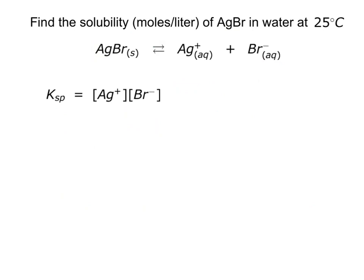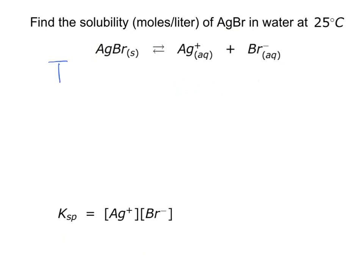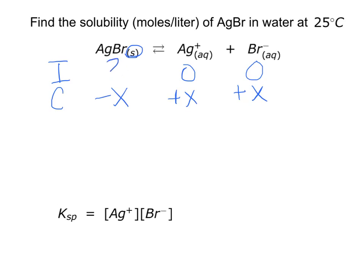Now that we have this Ksp expression, we're going to make an ICE box. Initially, there's some amount of AgBr solid, but since it's a solid it doesn't actually matter. Initially we say there is 0 Ag⁺ and 0 Br⁻. The change: Ag⁺ is going to gain some amount x, which is the same for Br⁻ because it's a 1-to-1 ratio. The AgBr solid is going to lose that same amount x because of the 1-to-1-to-1 mole ratio. So at equilibrium we have something minus x for AgBr, and x and x for Ag⁺ and Br⁻.